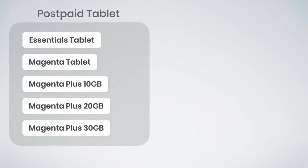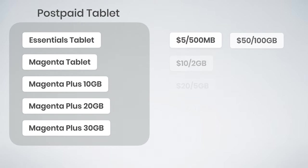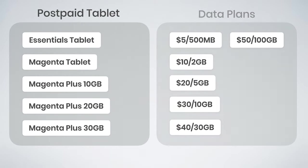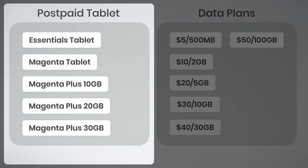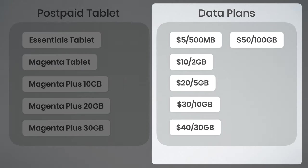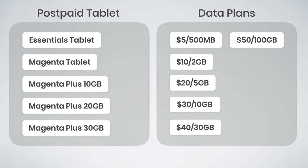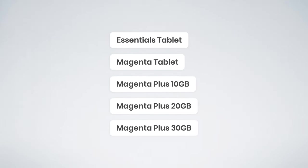In this video, I'm explaining T-Mobile's 18 different tablet and hotspot data plans. They offer post-paid tablet plans available for their post-paid subscribers, and they offer data plans that are available as both post-paid options and prepaid options. Let's start off with the post-paid tablet plans.